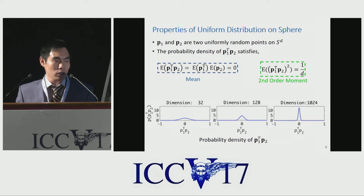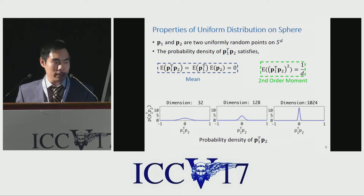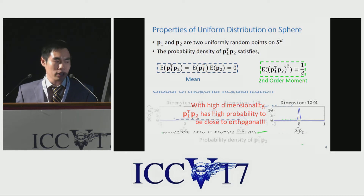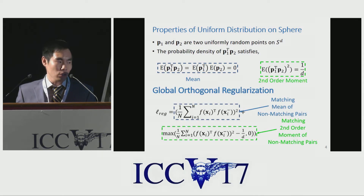We show the distribution for different values of D. We can see that as D increases, the distribution gets more concentrated around zero. With high dimensionality, two points have a high probability of being close to orthogonal.